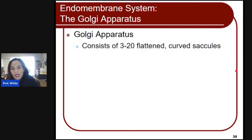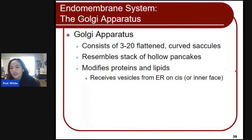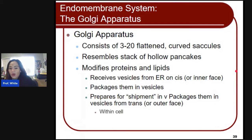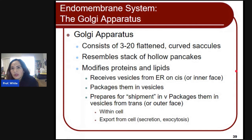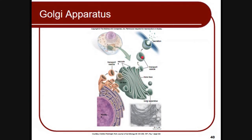The Golgi apparatus consists of three to twenty flattened curved saccules and resembles a stack of hollow pancakes. It modifies proteins and lipids, receives vesicles from the endoplasmic reticulum at the cis face, and packages them into vesicles at the trans or outer face. These modified proteins are then either delivered within the cell or exported from the cell through secretion or exocytosis.